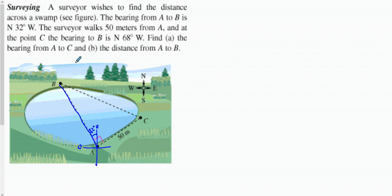At point C, the bearing to B — we're going to do the same thing. The surveyor walks to point C and the bearing is going to be Northwest at 68 degrees. So we go right here at 68 degrees that way.